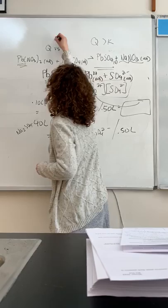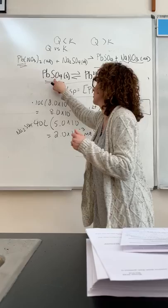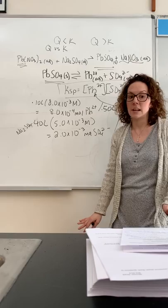If Q is less than K, that means I don't have enough product made. So the reaction is going to shift right. If I shift right, that means I have aqueous solution. I don't have a precipitate.